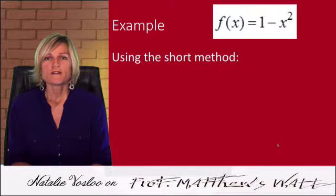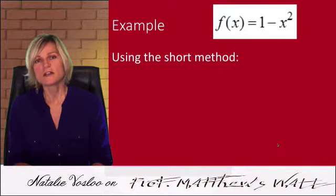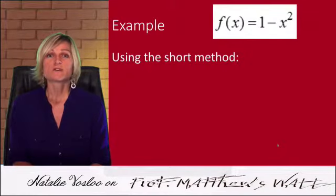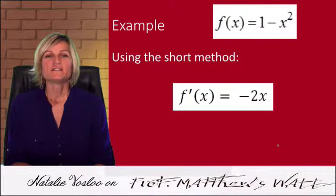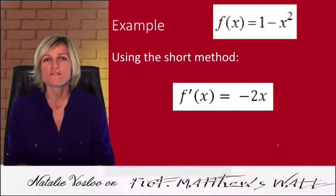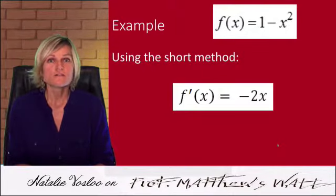Okay, how do we do the short method? We take the power of 2, which is the power of x, and we multiply it by the number in front, and then we subtract 1 from the power. So the derivative will be minus 2x. So now our derivative is equal to minus 2x. That is handy to have. You can write that somewhere down on the side, and you can keep that just to know how to check it.